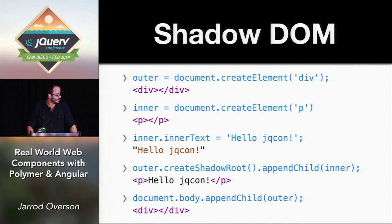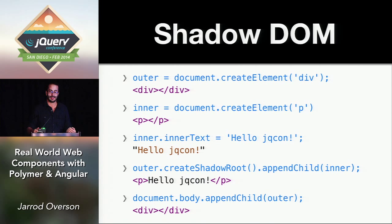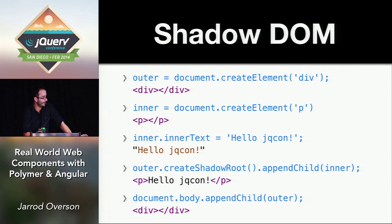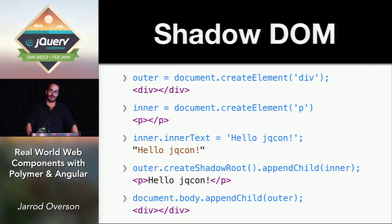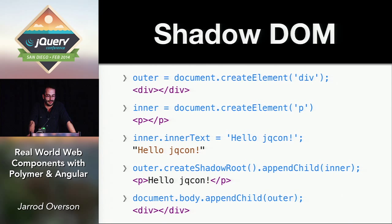Next up is Shadow DOM. There is a lot of magic occurring in Shadow DOM and I'm covering it in about three slides — just a whirlwind tour. Basically you create an outer div element, an inner p element, attach inner text, then create a shadow root on the outer element and append the inner element to it, and add that to the body. When you append something, you get what you appended back as a result — and what we appended looks like a blank div. What you're getting is a magical sandboxed piece of DOM that you can do whatever you want with.